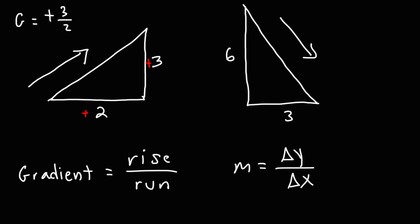It's positive when going up and negative when going down. For the triangle on the right, we're going down 6 units — so that's negative — but moving 3 units to the right, so that's positive. The gradient is negative 6 divided by 3, giving us a gradient of negative 2.